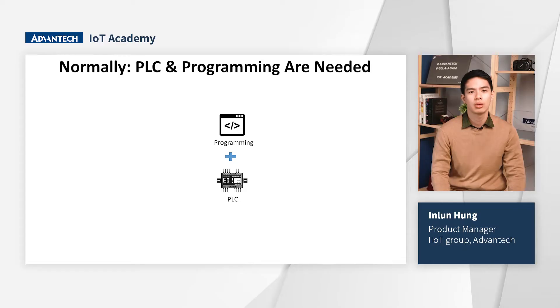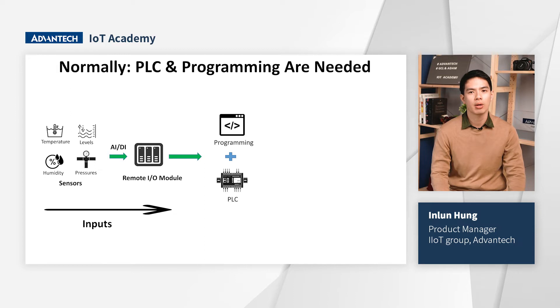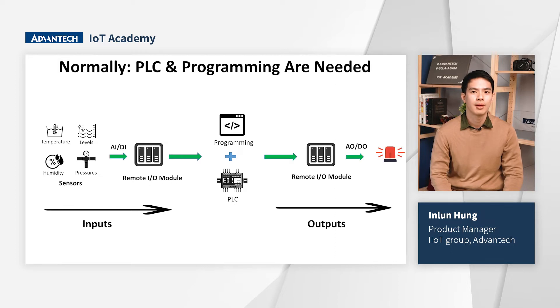GCL stands for Graphic Condition Logic. The function enables users to execute simple logic to easily control I/O modules with visual graphic settings. Generally, users need a PLC and programming to control an automatic process. First, remote I/O modules receive data from sensors, then the PLC executes the program, and finally the PLC sends commands to remote I/O to activate switches or alarms.